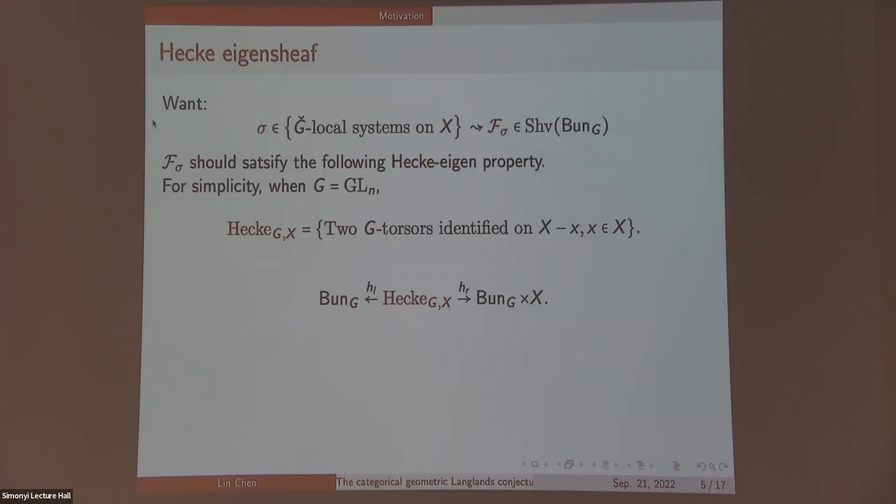You can consider the functor that pull back from the left arm and push forward on the right arm. The requirements of Hecke-eigen property says that if you apply this functor to your F-sigma, it should be isomorphic to F-sigma box sigma. In fact, this is a structure rather than a property. It should satisfy some higher compatibility, which I will not mention. This is just a direct geometric analog of Hecke-eigen property in number-theoretic Langlands.